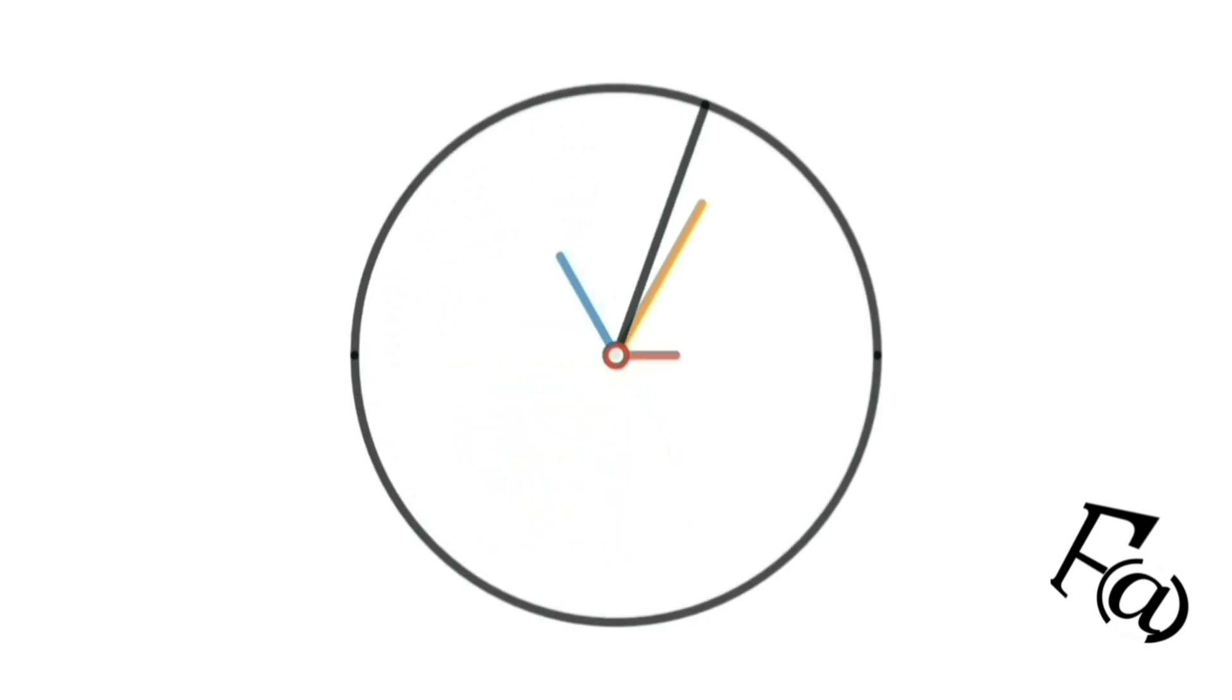If we add the blue and orange vectors using the parallelogram rule of vector addition, then we get this green vector. Further, adding this new vector to our original red vector, we get our resultant magnetic field. As you can see, this magnetic field represented by the black line rotates uniformly with a constant magnitude.